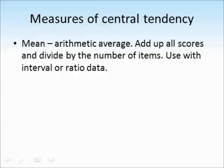One way that we can describe data is to use descriptive statistics like measures of central tendency. And one of these is the mean which is the arithmetic average. To calculate this you add up all of the scores and divide them by the number of scores that you have. And you can use this with interval or ratio data. So for example with this data set we could add up all of these numbers which comes to 50 and then divide it by 10 because there are 10 scores. And that would give us a mean of 5.